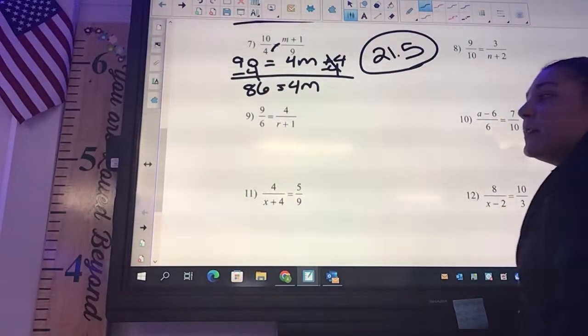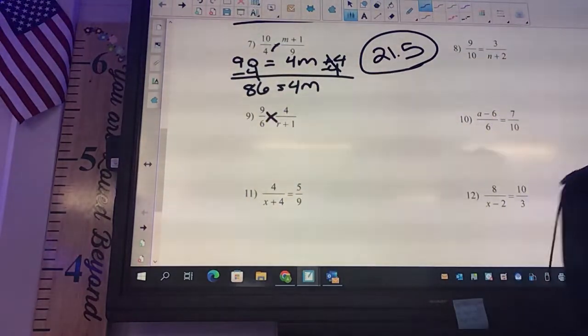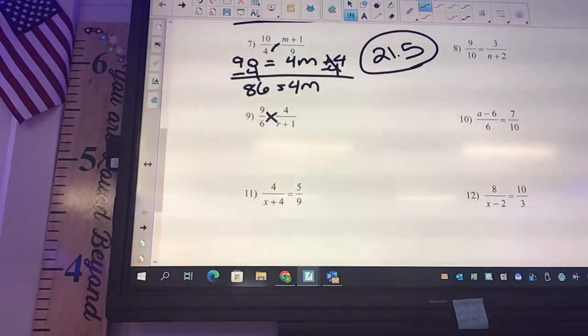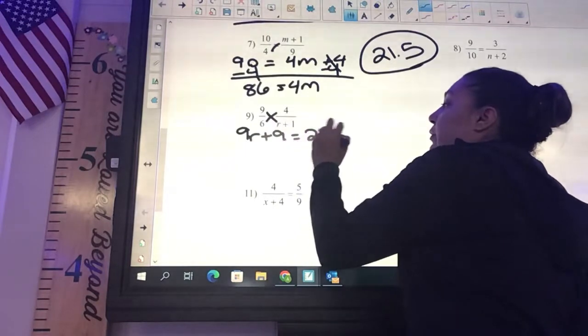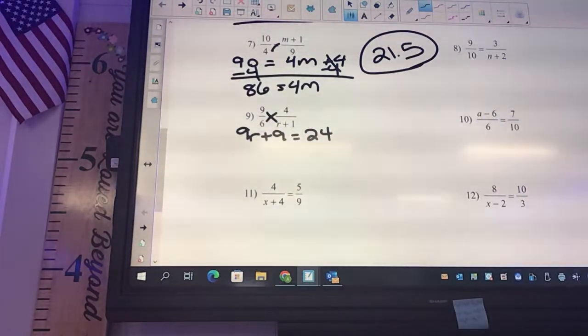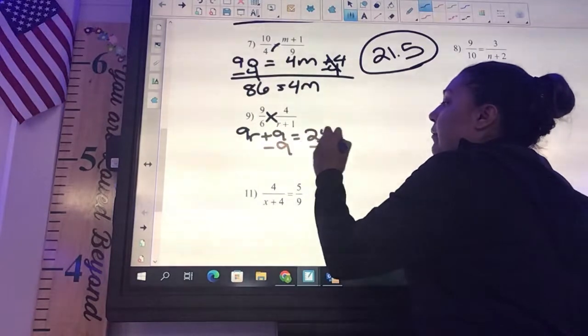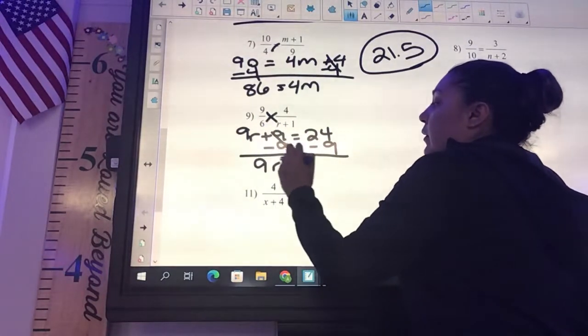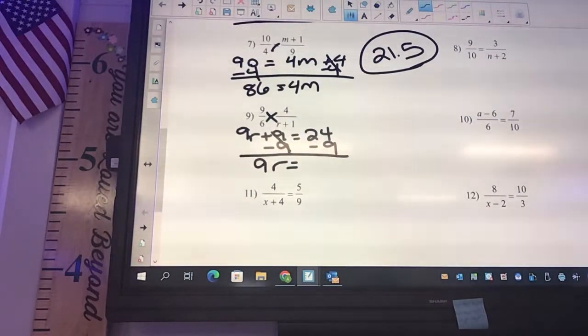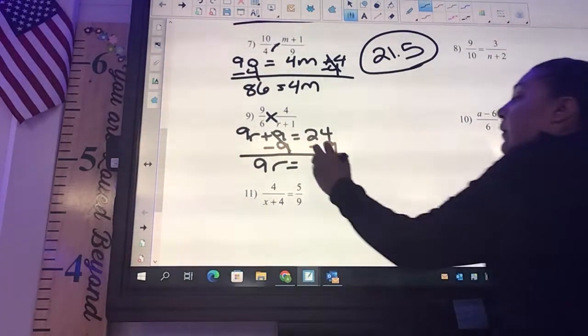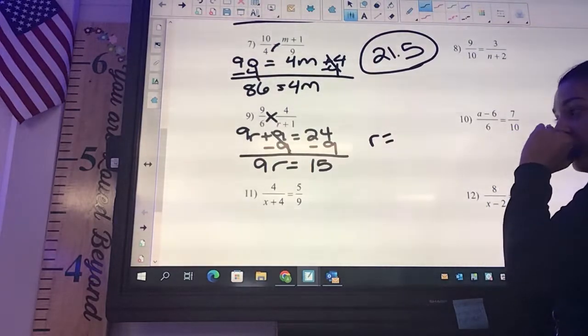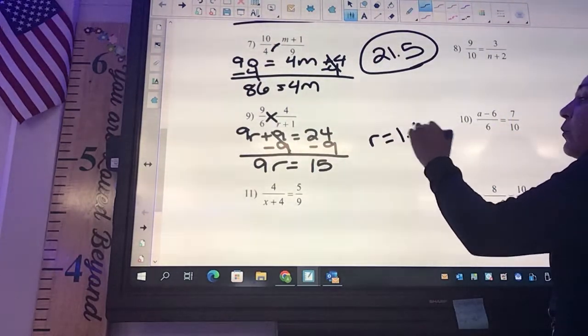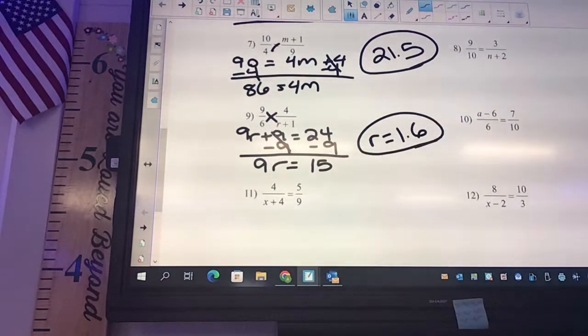It does not matter if you do the 4 times 6 first or the 9 times r plus 1 first, it doesn't make any difference either way. So 9 times r is going to be 9r, and then 9 times 1 is 9 equals 24. We're going to say minus 9 minus 9. What's 24 minus 9? 15. So then you're going to get 15 divided by 9. What are you going to get? 1.6. 1.6. And now you're good?